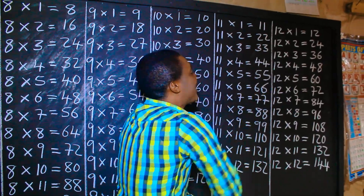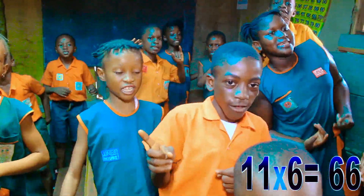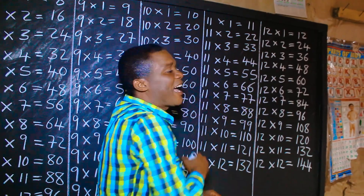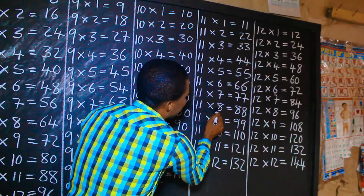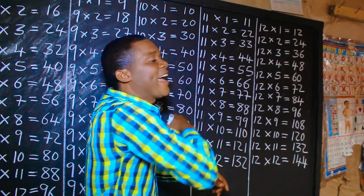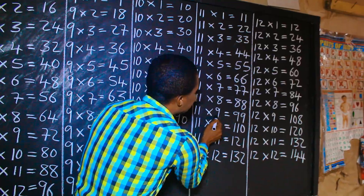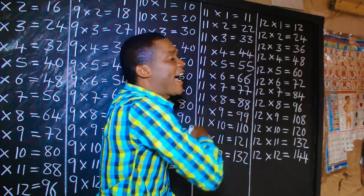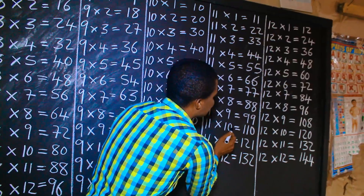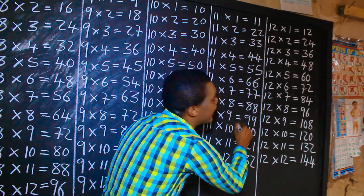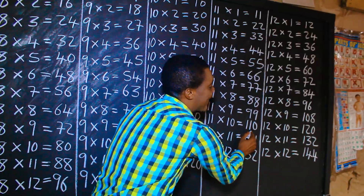Eleven times six is sixty-six. Eleven times seven is seventy-seven. 11 times 8 is 88. 11 times 9 is 99. 11 times 10 is 110.